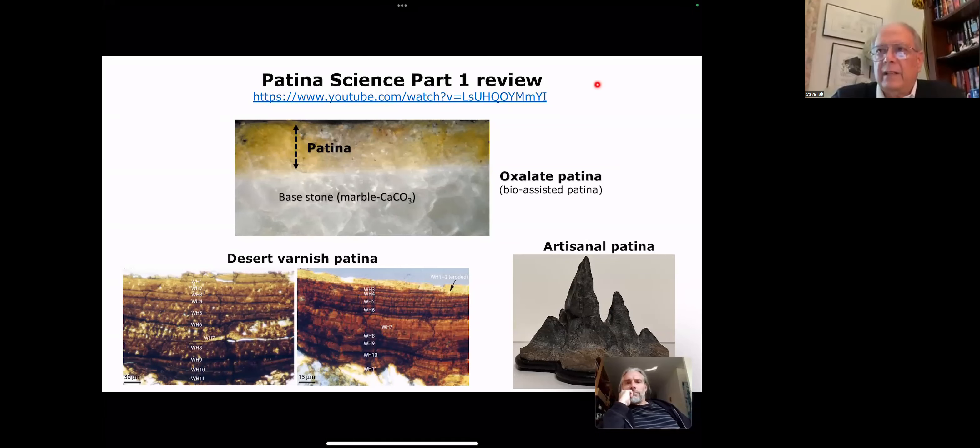In part one, which is available on YouTube, we talked about three of the four patinas. We talked about the oxalate patina. This is a really nice example shown here, a rare example. This is marble statuary. You can see the patina up here and then the base stone down here. The metal oxalate patina actually destroys stone in order to form. What we see as patina here was originally stone.